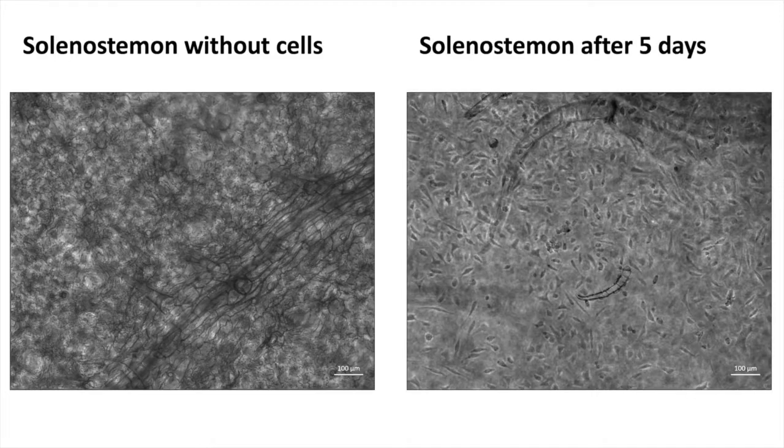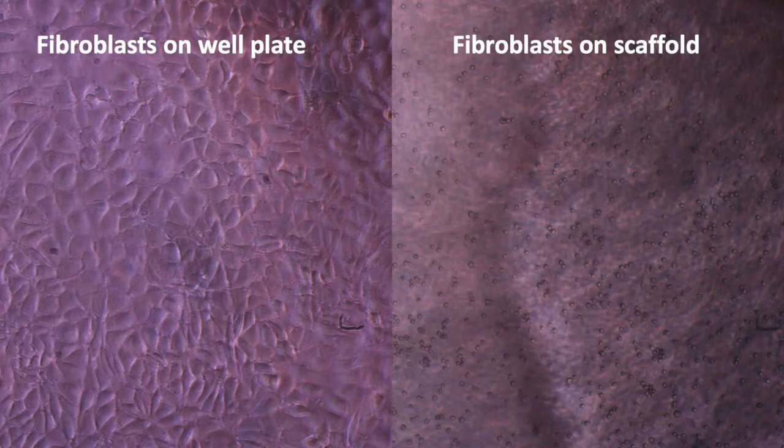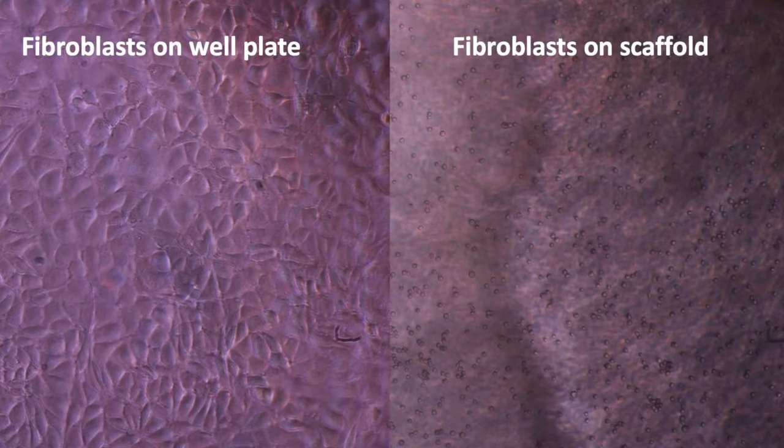After coating, the cells were sown at a concentration of 80,000 cells per leaf and filled with medium. The difference between standard cultivation on a well plate and on cellulosic scaffolds was detected.